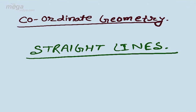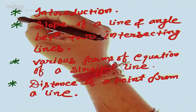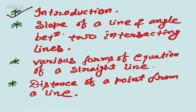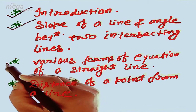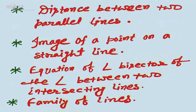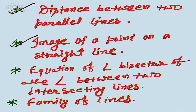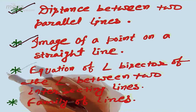I'm taking the topic coordinate geometry, which is a very important topic in mathematics for IIT. In coordinate geometry, I'm covering straight lines. The topics are: first, introduction; second, slope of a line and angle between two intersecting lines; third, various forms of the equation of a straight line; next, distance of a point from a line; next, distance between two parallel lines; and image of a point on a straight line.